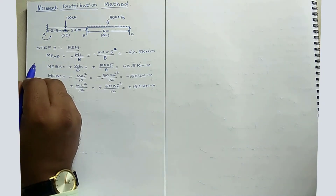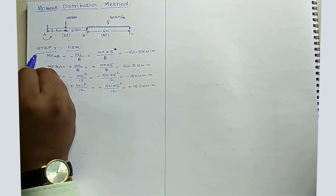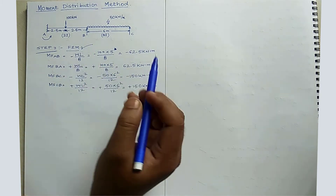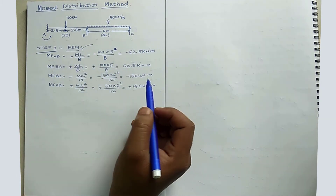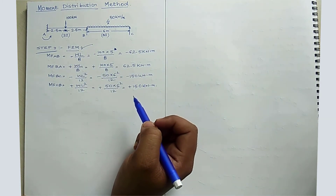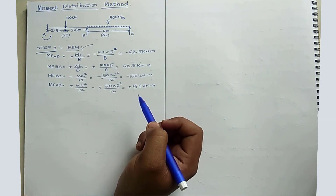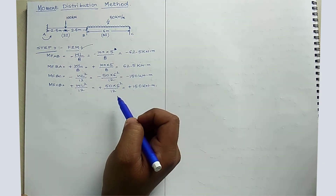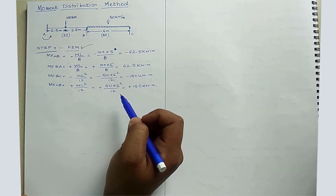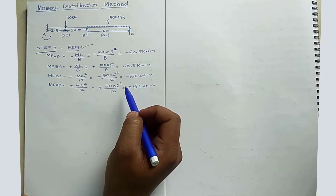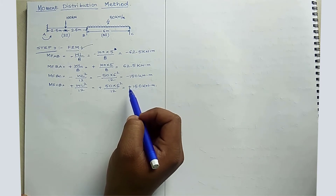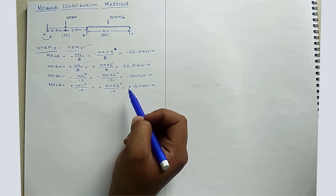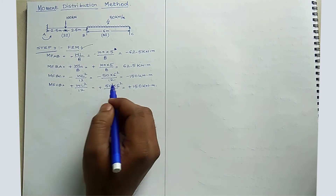In step 1, we have calculated all fixed-end moments: FEM AB = −62.5 kNm, FEM BA = +62.5 kNm, FEM BC = −150 kNm, and FEM CB = +150 kNm.